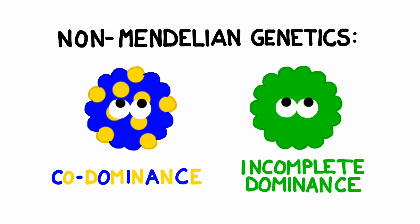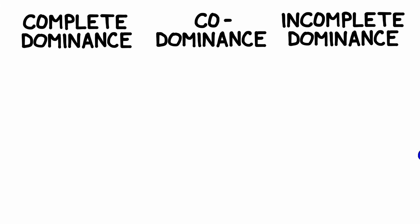However, many traits don't follow the rules of Mendelian genetics. Instead, the offspring has its own phenotype, rather than matching either of their parents. We call them non-Mendelian traits. There are three types of dominance that you should be familiar with: complete dominance, co-dominance, and incomplete dominance.